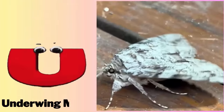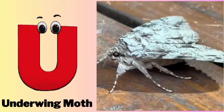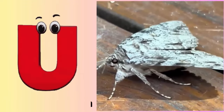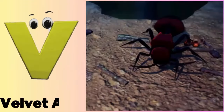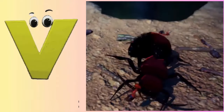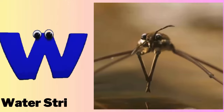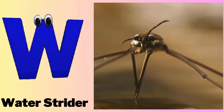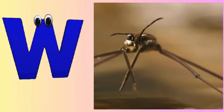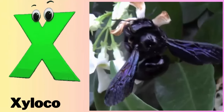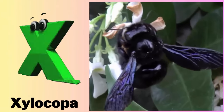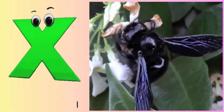U - U for underwing moth. V - V for velvet ant. W - W for water strider. X - X for xylocopa.